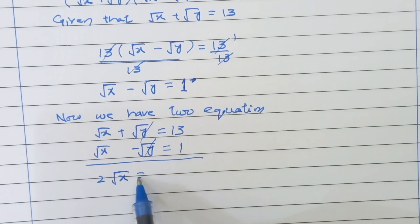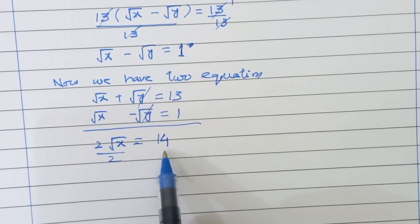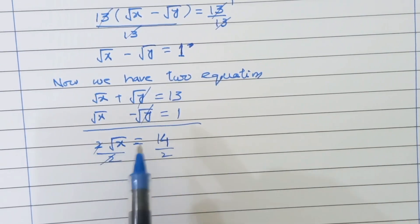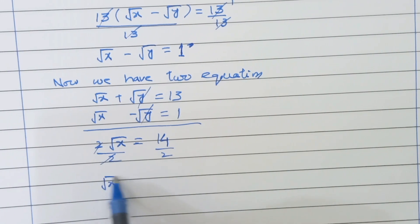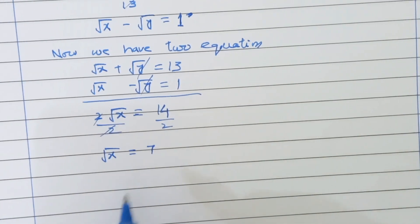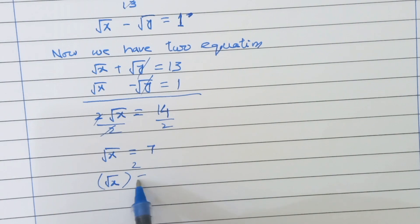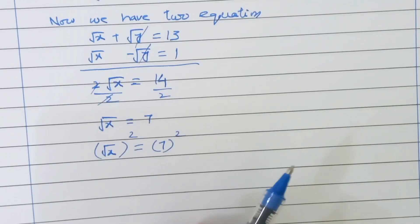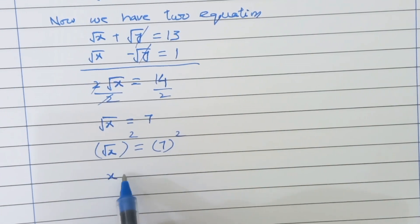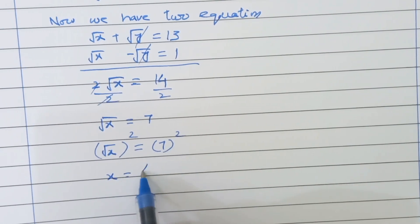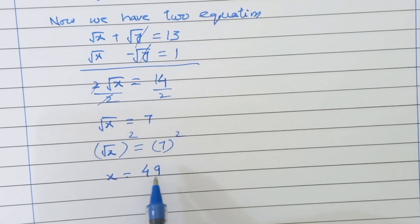And 13 plus 1 becomes 14. Now, dividing both sides by 2 — these twos cancel and we are left with root x equals 14 divided by 2, so root x equals 7. Squaring both sides to find the value of x: root x squared equals 7 squared, which gives x equals 49.